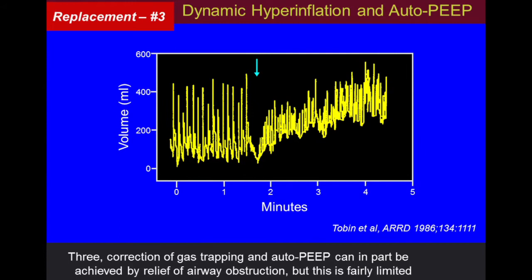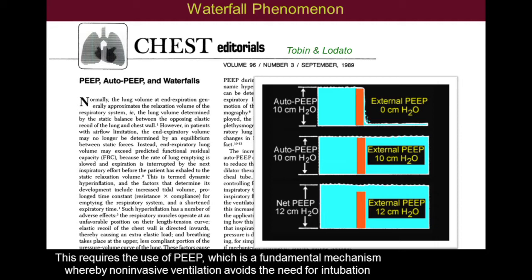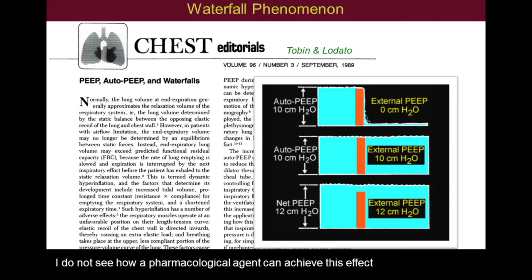Three: correction of gas trapping and auto-PEEP can in part be achieved by relief of airway obstruction, but this is fairly limited. Given that auto-PEEP is mainly caused by dynamic airway collapse, the main therapeutic challenge is to raise the downstream pressure and bring it closer to alveolar pressure so as to overcome the waterfall phenomenon. This requires the use of PEEP, which is a fundamental mechanism whereby non-invasive ventilation avoids the need for intubation. I don't see how a pharmacological agent can ever achieve this effect.